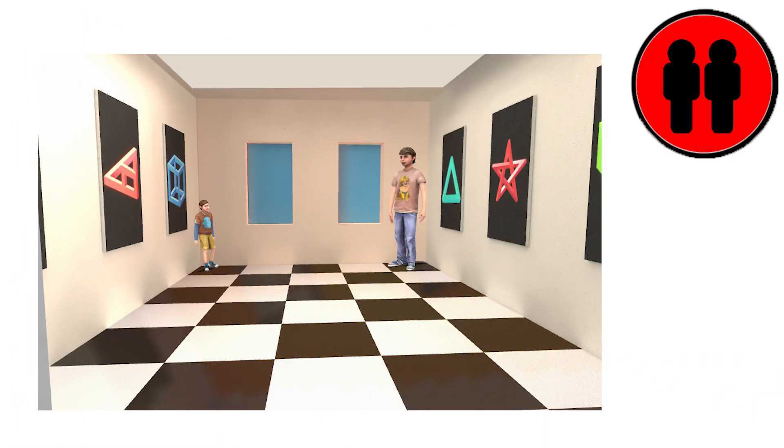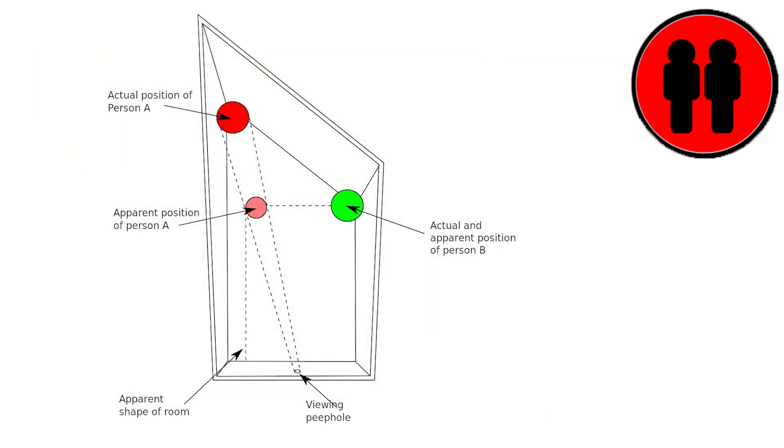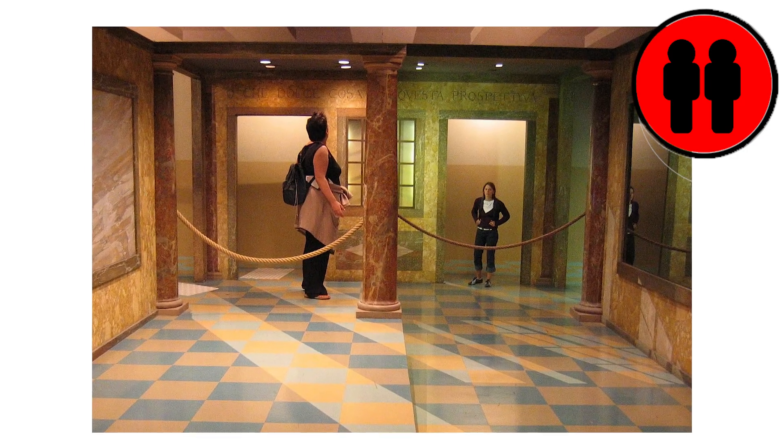Ames Room. The Ames Room optical illusion is a phenomenon that creates the impression that people or objects in a room change their size and shape depending on their location.